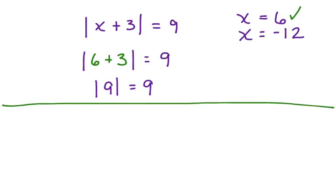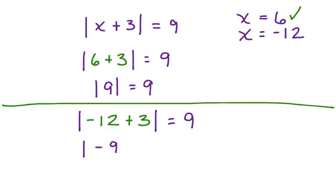Now let's see if it holds true for negative 12. Here we have the absolute value — substitute negative 12 for x — plus 3 is equal to 9. The absolute value of negative 12 plus 3 is negative 9. The absolute value of negative 9 is equal to 9. This one checks as well. Let's look at another example.